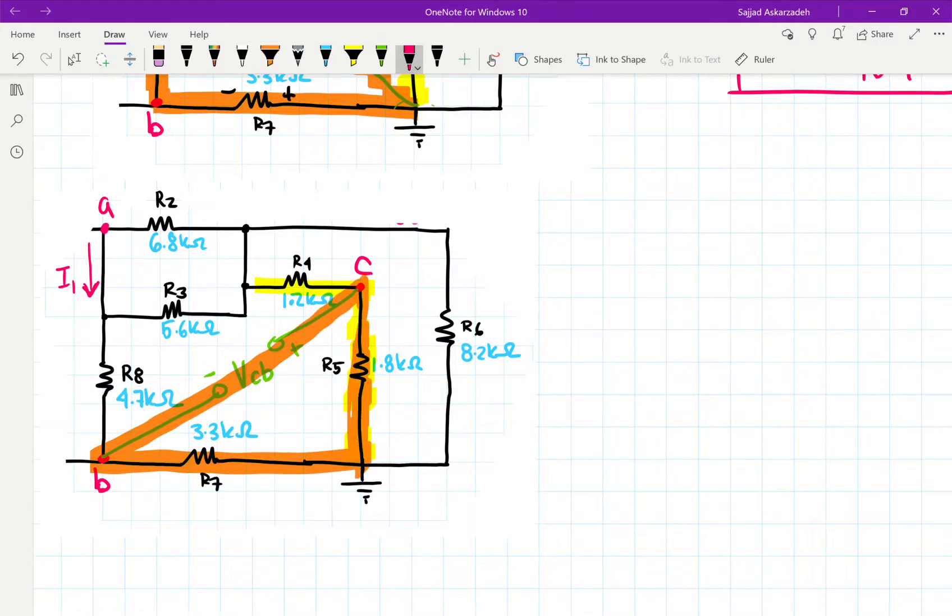So now what we're going to do is we're going to go this way. So we're going to say plus minus, plus minus. And that one already has one. So we're going to say VR5 plus VR7 minus VCB is equal to zero.